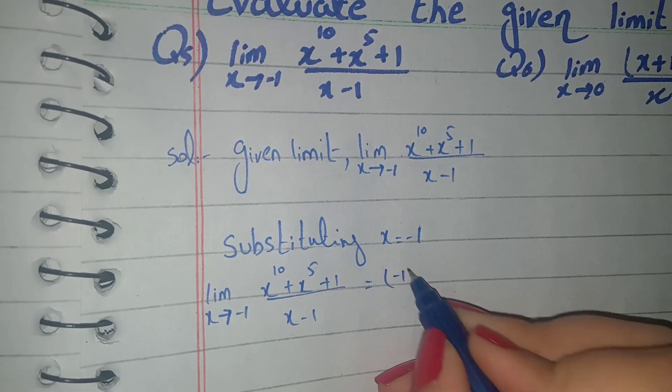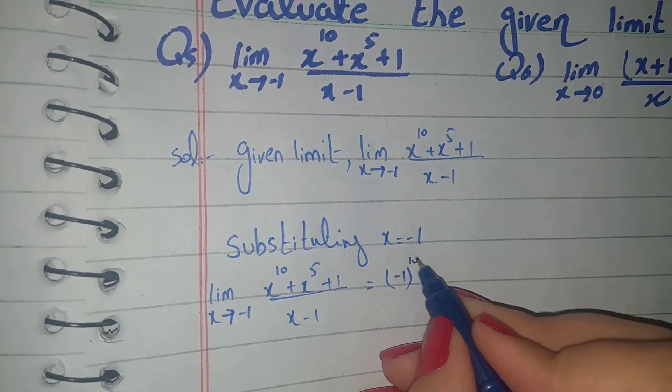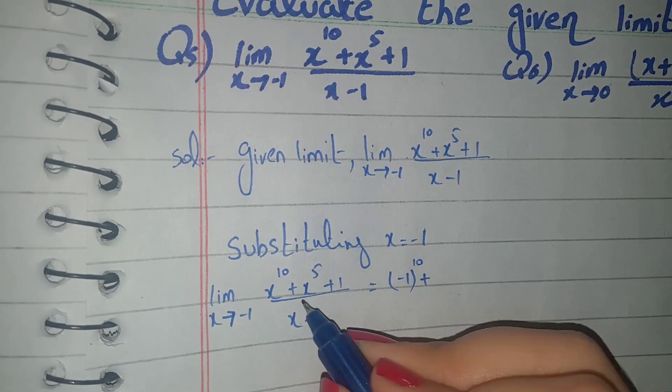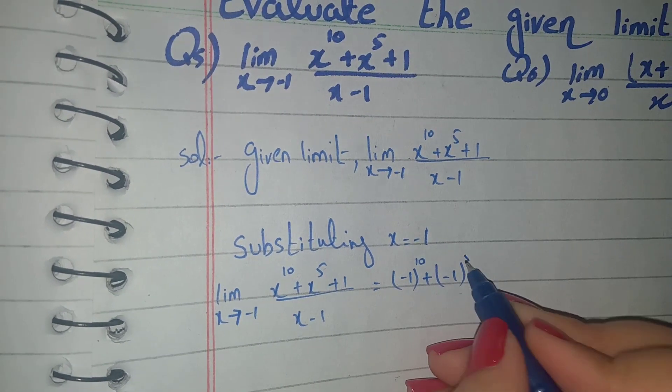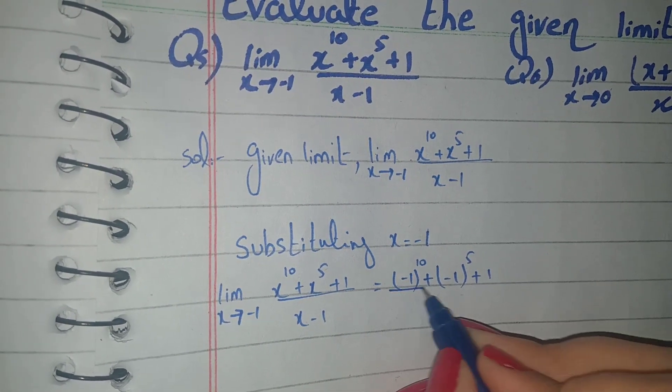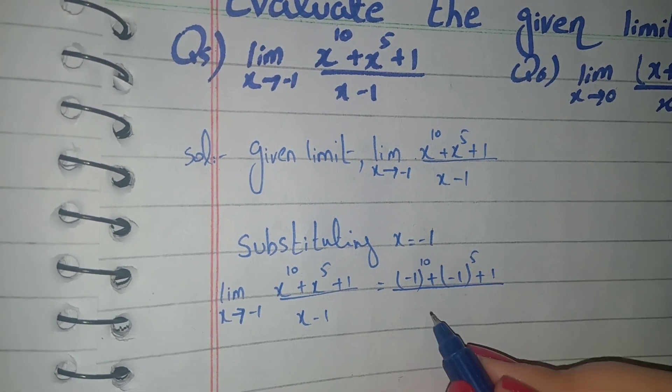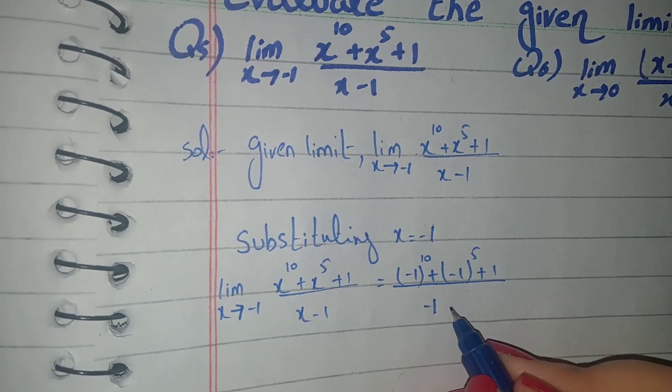x here, then negative 1 will be power 10. Plus x value to negative 1 power 5. Plus 1. Denominator x is, so here we have negative 1. This is minus 1.